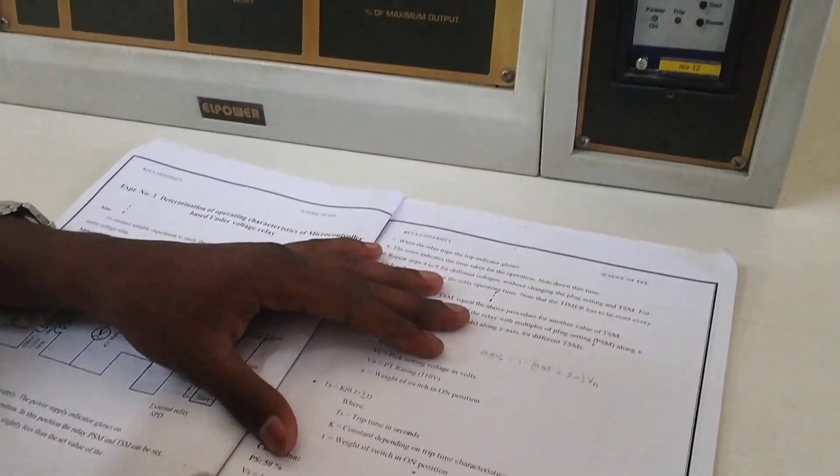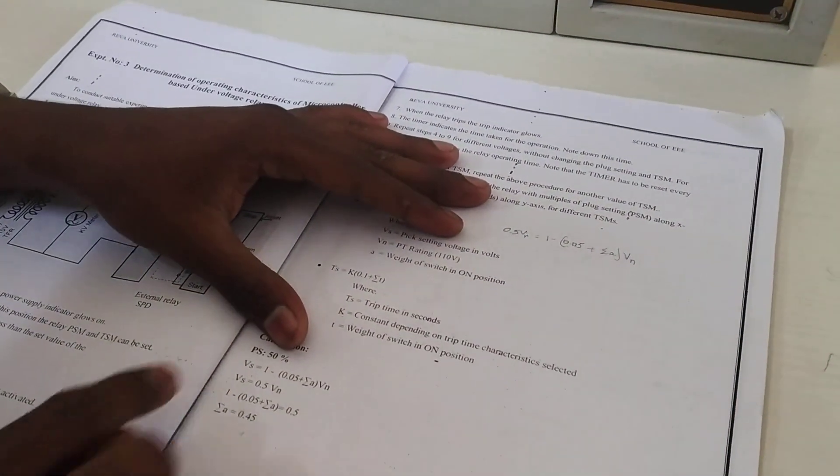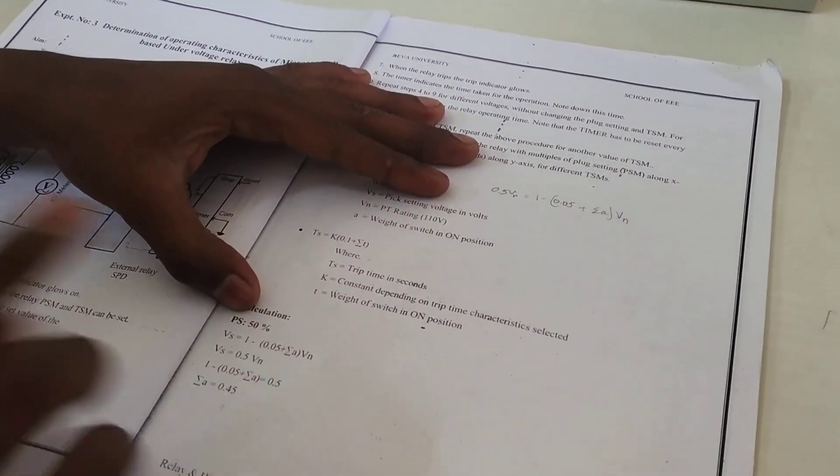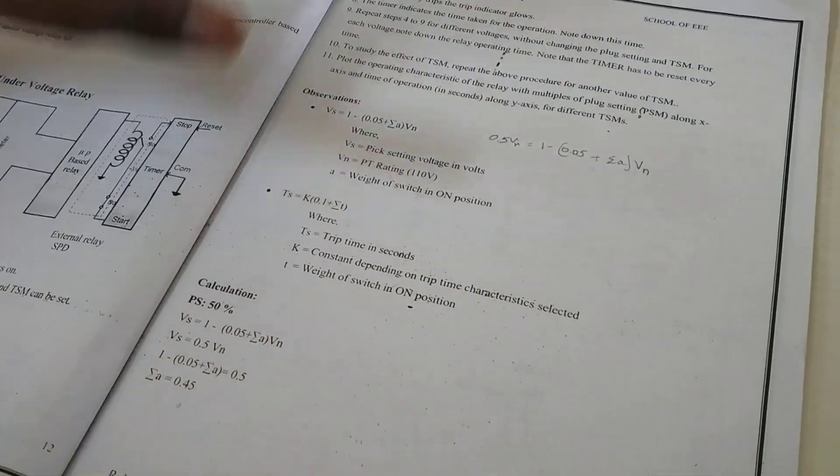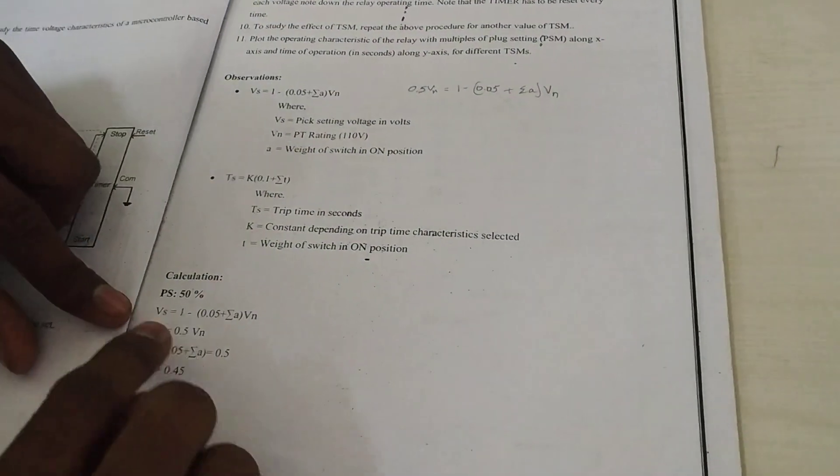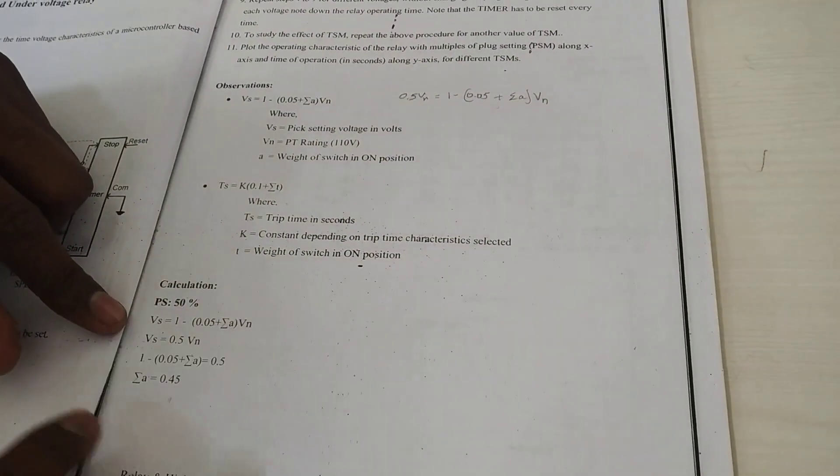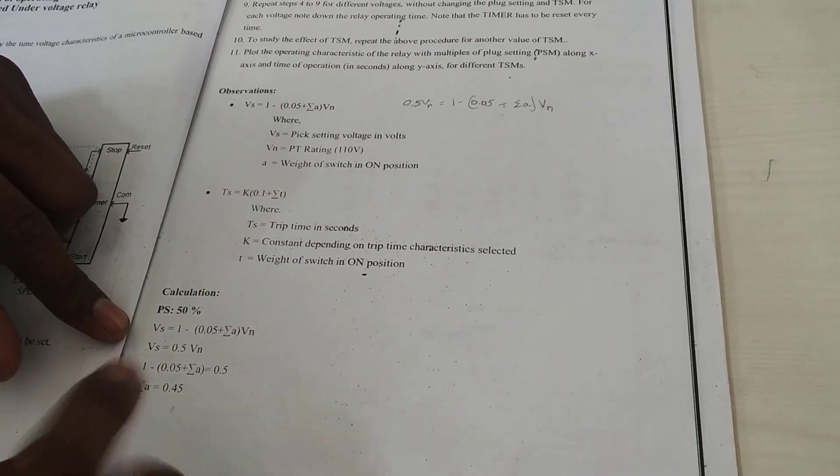First thing is you have to calculate A. It is a calculation of A. You have assumed plug setting as 50%, it is already preset, don't worry about that. Once you get the plug setting as 50%, you will get the summation A value or the A value.